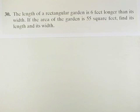The length of a rectangular garden is 6 feet longer than its width. If the area of the garden is 55 square feet, find its length and its width.